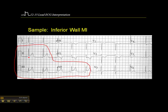Right off the bat, in lead 2, we have the baseline here — the J-point is elevated about 2, maybe 3 millimeters. In lead 3, we have the baseline here and the J-point is elevated.